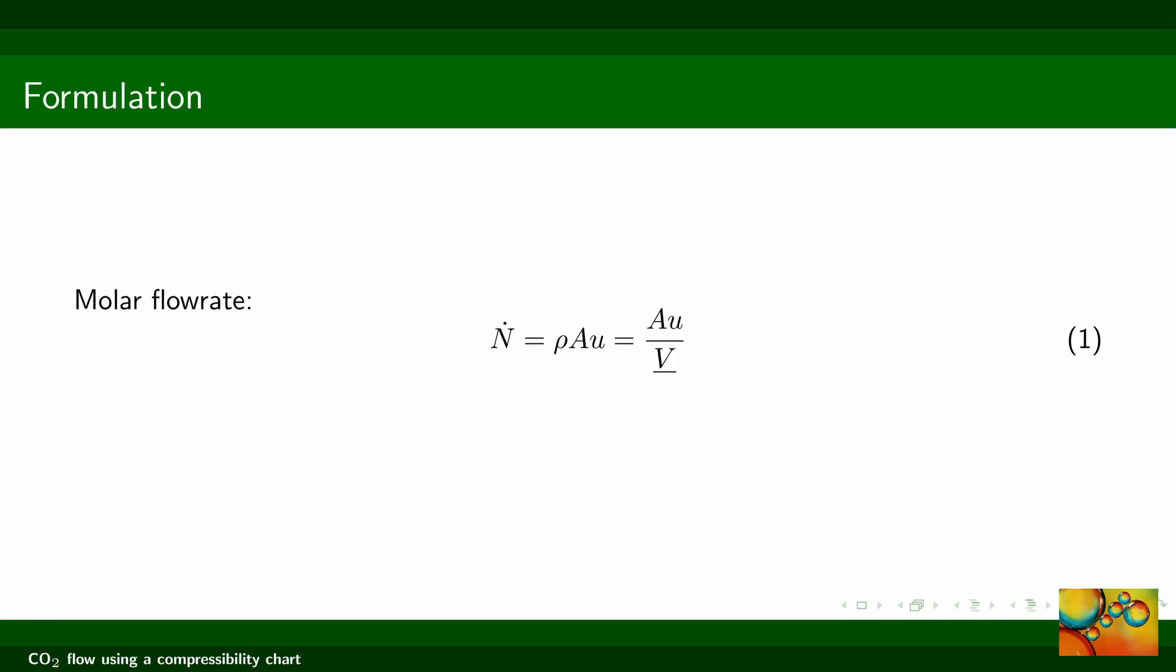Equation 1 shows the relationship between the molar flow rate N-dot and the molar density rho, the cross-sectional area of the pipeline A, and the average velocity u. We use that the reciprocal of the molar density is the molar volume, which is represented with an underlined V in equation 1.